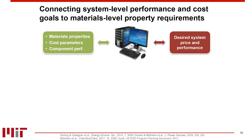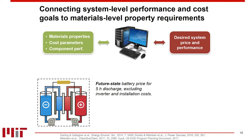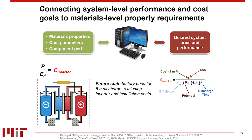Like any good chemical engineer, I draw a box around my system to define a control volume and establish some benchmarks. I look at future battery prices assuming Gigafactory-level production, set a discharge time of five hours — about where most of the application space exists — and exclude inverter installation costs. I arrive at an equation for the price of the battery per energy stored, which is a function of reactor cost, electrolyte cost, and balance of plant and additions to price. Balance of plant is all the other stuff you need — pumps, heat exchangers, tanks. Additions to price are labor, depreciation, and profit margin, which is why it's a price rather than a cost.